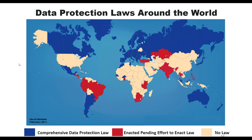This chart gives a good synopsis of what is happening across the world. As far as comprehensive data protection laws are concerned, we can see them in the dark blue color, and there are enacted and pending efforts including India and other parts of South America, parts of Africa, and many places — including China — where there is absolutely no law to protect data. India has come up with a law but it's awaiting political approval before lawmakers can finalize something.